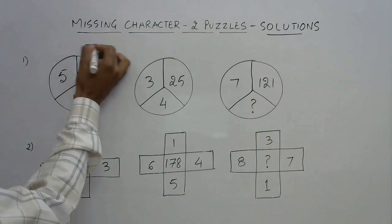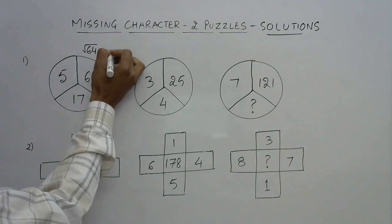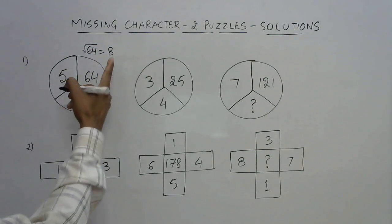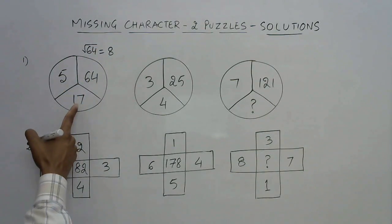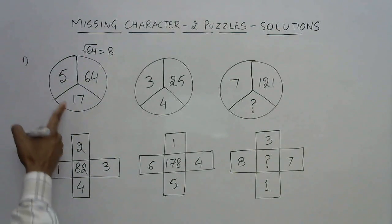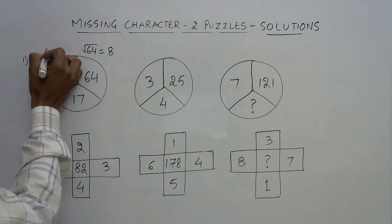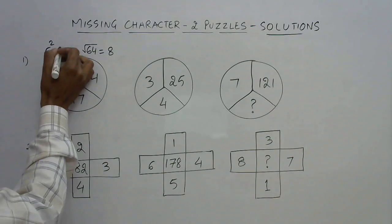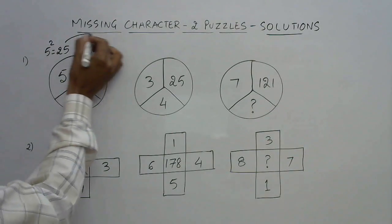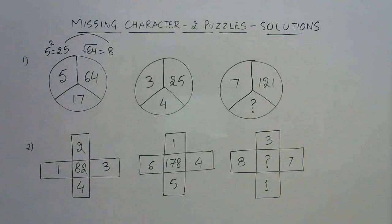So if you take square root of 64, it will come out to be 8. And 8, here we have 17. So if you take the square of this number 5, this is 25.